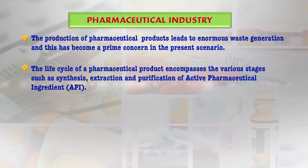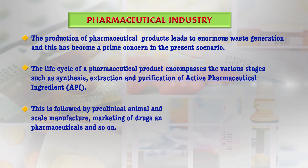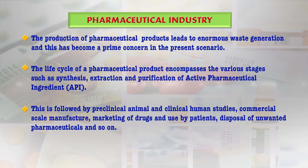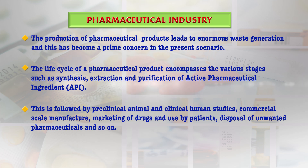The life cycle of a pharmaceutical product involves various stages: synthesis, extraction, and purification of the Active Pharmaceutical Ingredient (API), followed by pre-clinical animal studies, clinical human studies, commercial-scale manufacture, marketing of drugs, use by patients, and finally disposal of unwanted or expired pharmaceuticals.